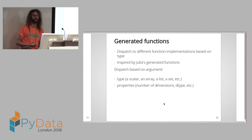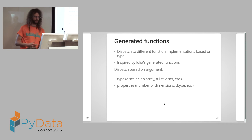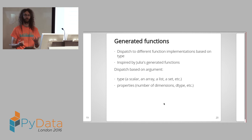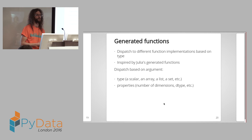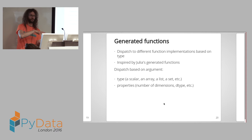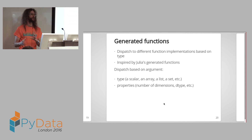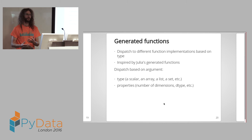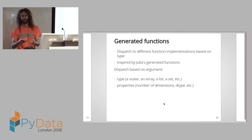Another new feature in Numba is generated functions. One problem before was that if you wanted to create a function that did different things for different types, you couldn't — you'd get a type error. It's possible to write a function that does the same thing to different types, but not different things to different types. Generated functions in Numba are partly inspired by generated functions in Julia.